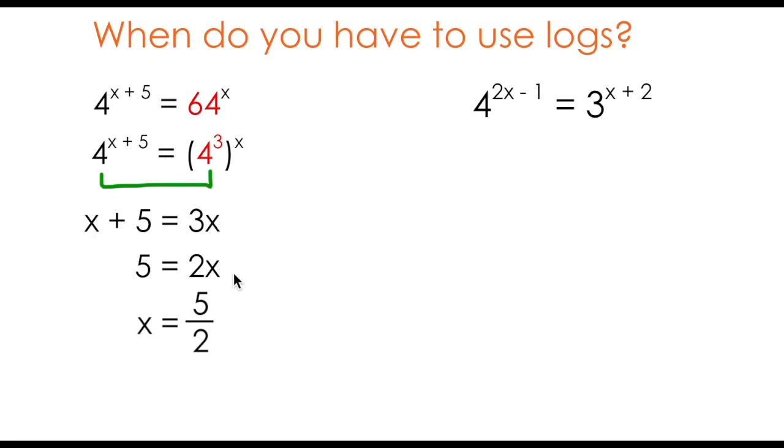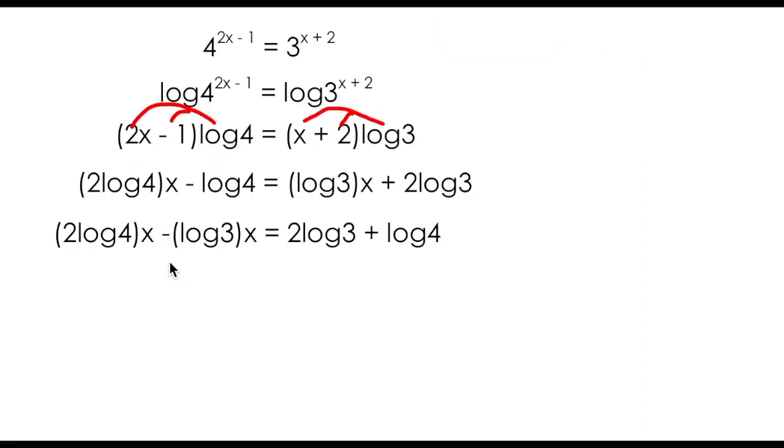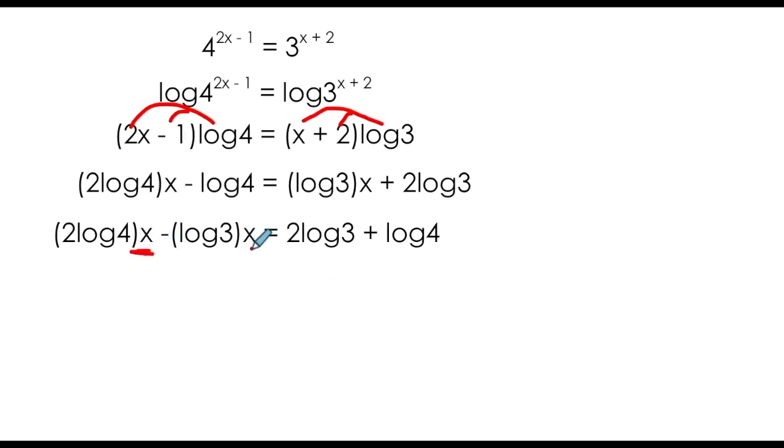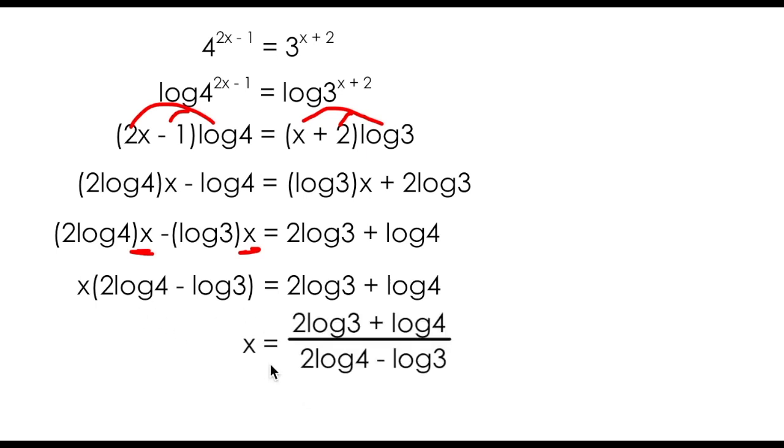So at this point we can solve this equation just like we did in the first example when we had x plus 5 equals 3x. We brought all the x terms over to one side, collected our like terms, and solved for x. We're going to do the same thing here, bringing all the x terms over to the left side, and all the non-x terms over to the right side. What I can do is make the observation that both of these terms have x in common. I can common factor x out of these two terms. Because I'm multiplying x times this mess, I can divide that mess over to the other side, leaving me with x equals an even bigger mess.